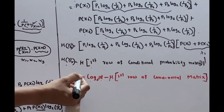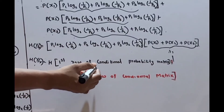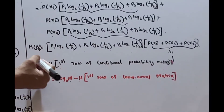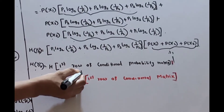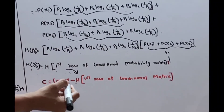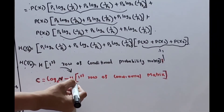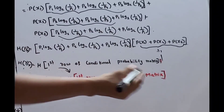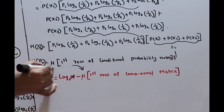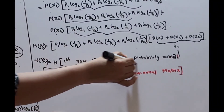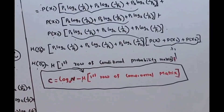We have channel capacity C equals log N minus H(y|x). Substituting H(y|x), the capacity becomes log N (base 2) minus the entropy of the first row of the conditional probability matrix. This is the equation for channel capacity of a discrete memoryless channel. Thank you.